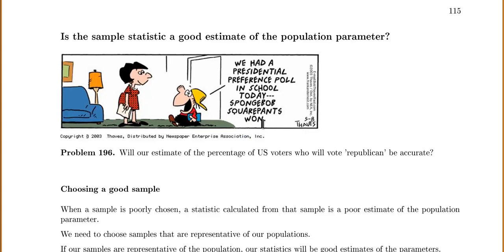The question that should be on everyone's mind is: is our sample statistic going to be a good estimate of our population parameter? Otherwise there's not much point in doing it. For problem 19.6, the whole point is: is our estimate of the percentage of U.S. voters who will vote Republican going to be accurate? We want to choose a good sample so that our estimate will be accurate.